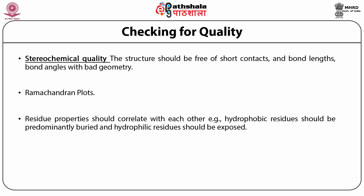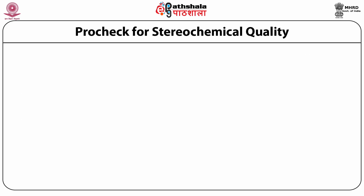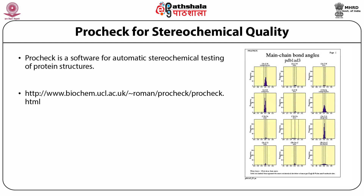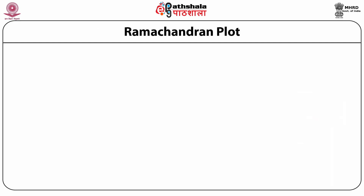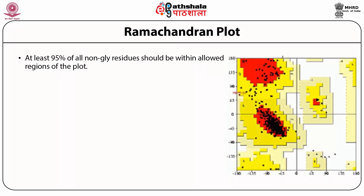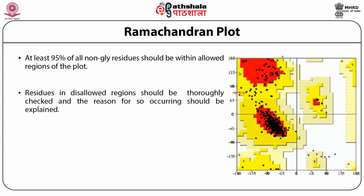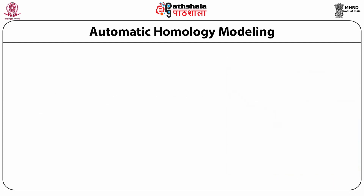There are standard programs like ProCheck which can calculate the stereochemical quality of a homology model — checking geometry, bond lengths, bond angles, and whether most amino acids are in the allowed Ramachandran regions. However, as emphasized, these check for refinement errors, not for wrong choice of template, misalignment, or errors of adding gaps incorrectly during the alignment process.